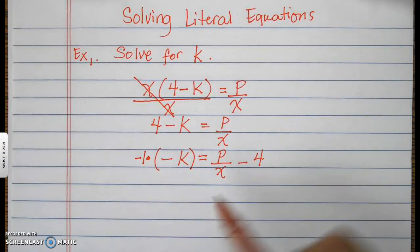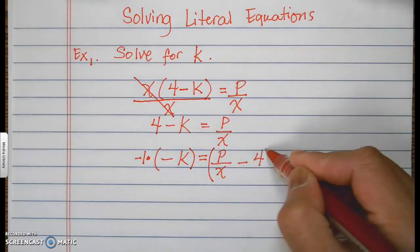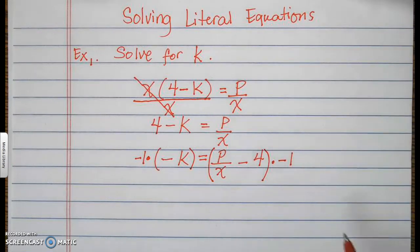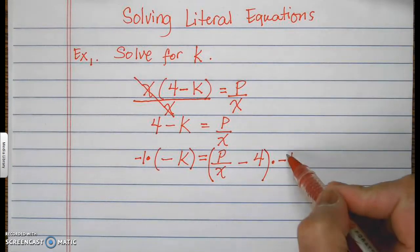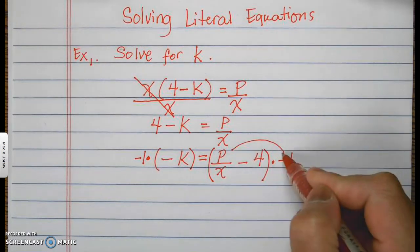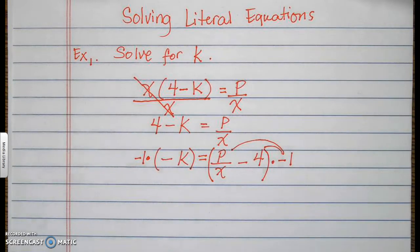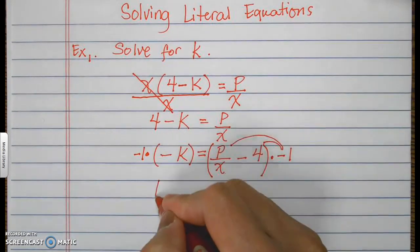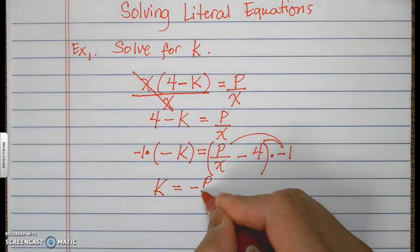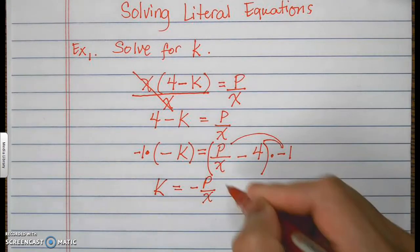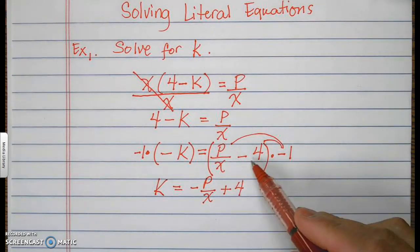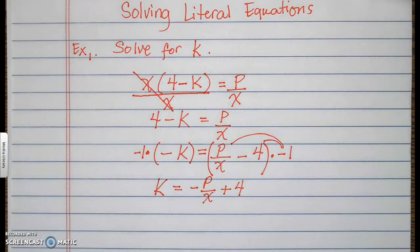Whatever I do on the left side, I will have to do to all of the right side. So I multiply the right by negative 1 and distribute: negative 1 times negative 4 turns into positive 4. This gives k equals negative p over x plus 4.